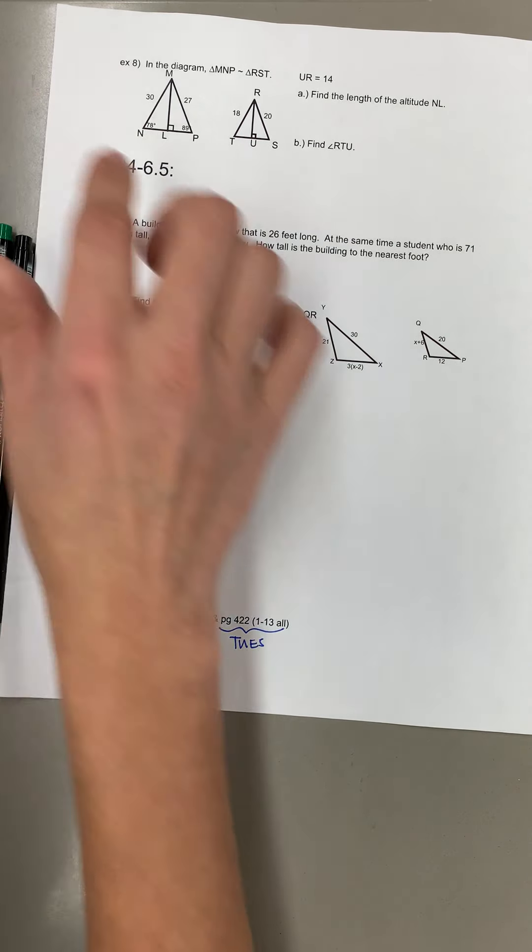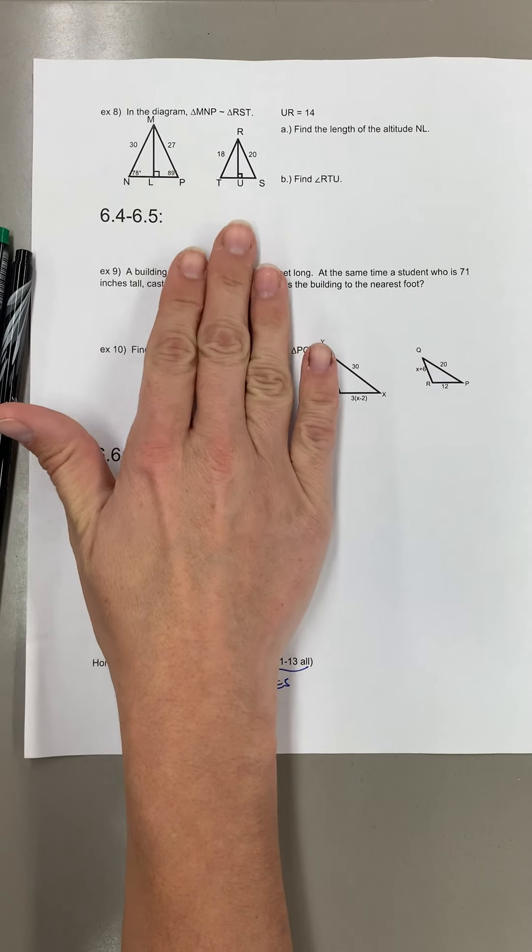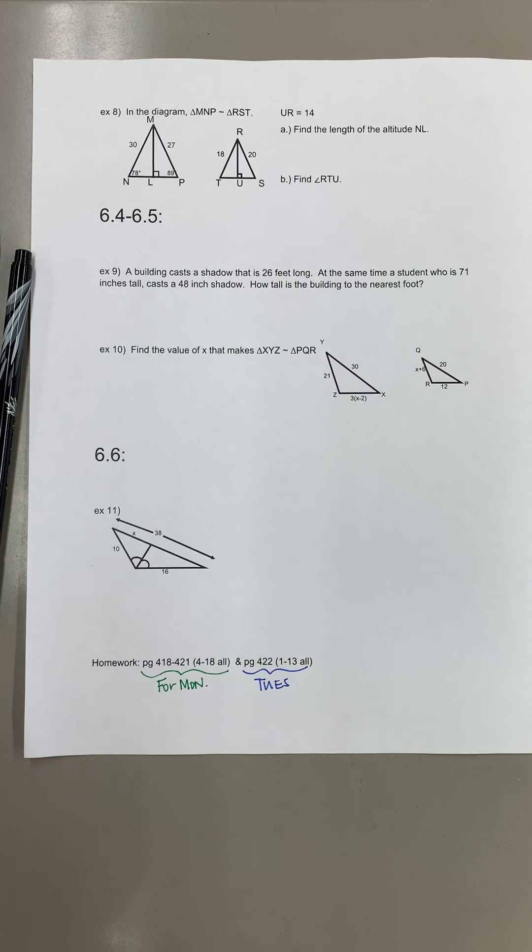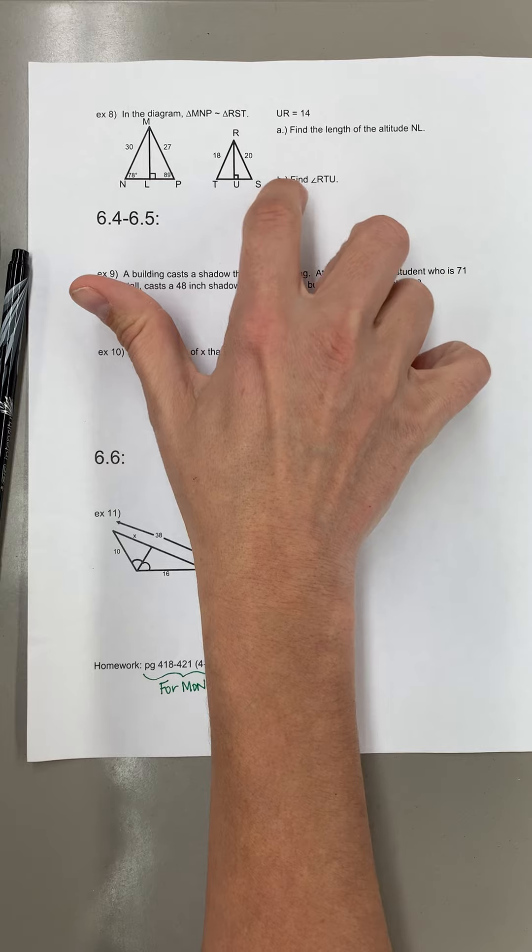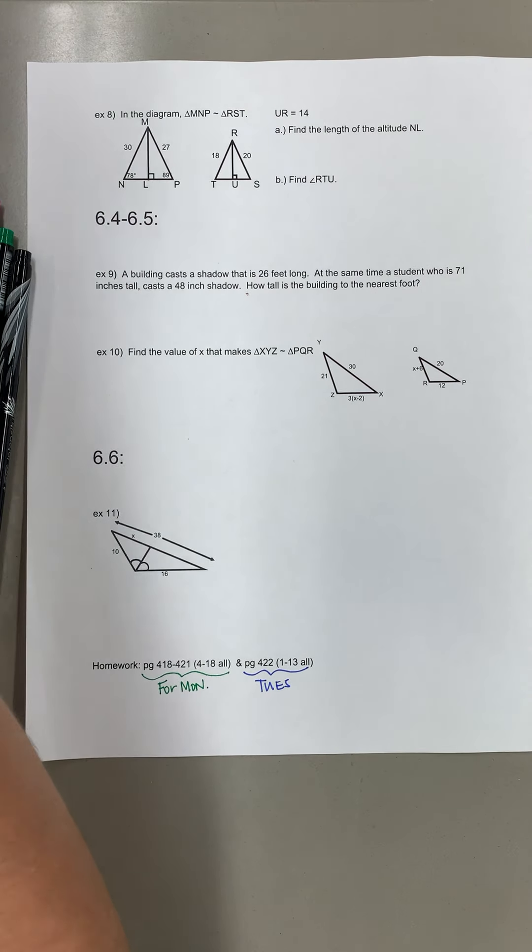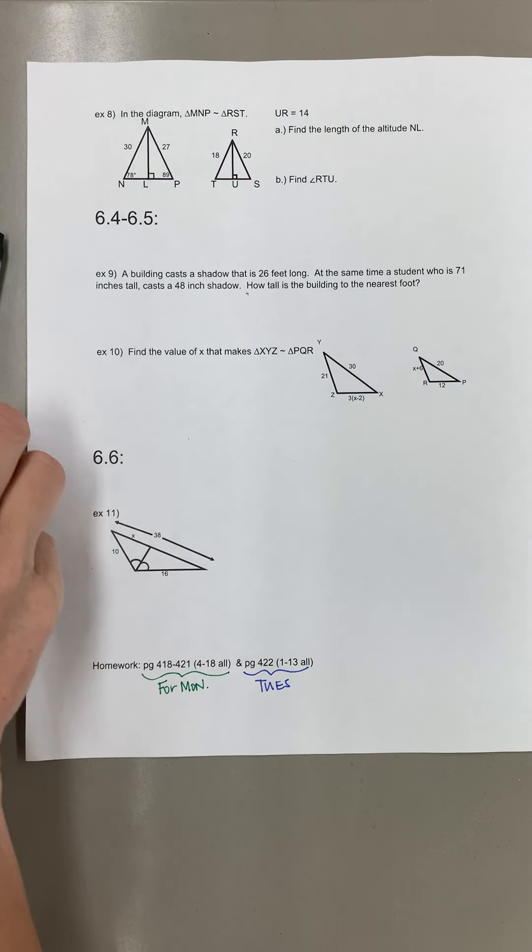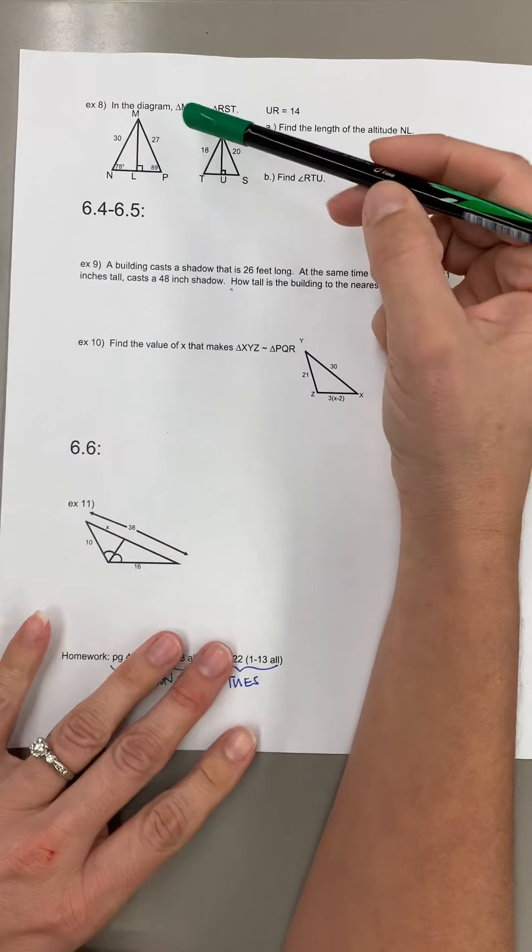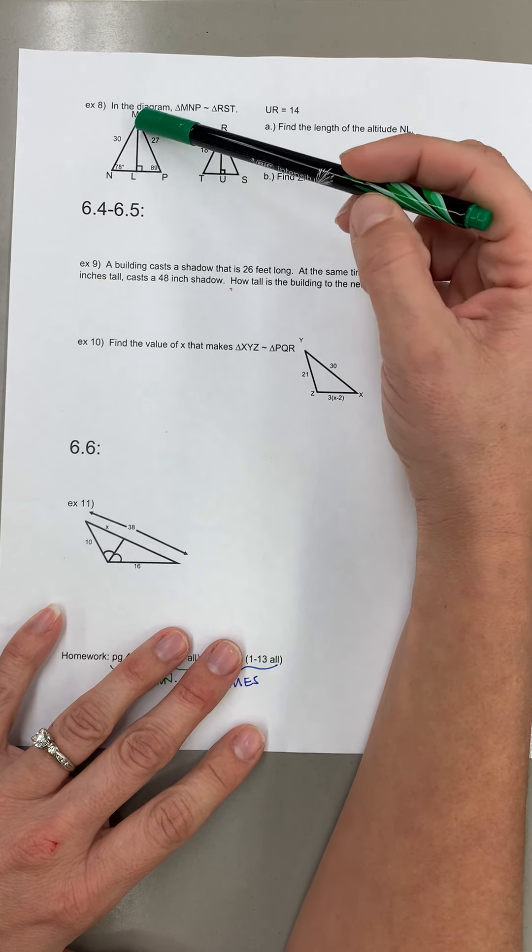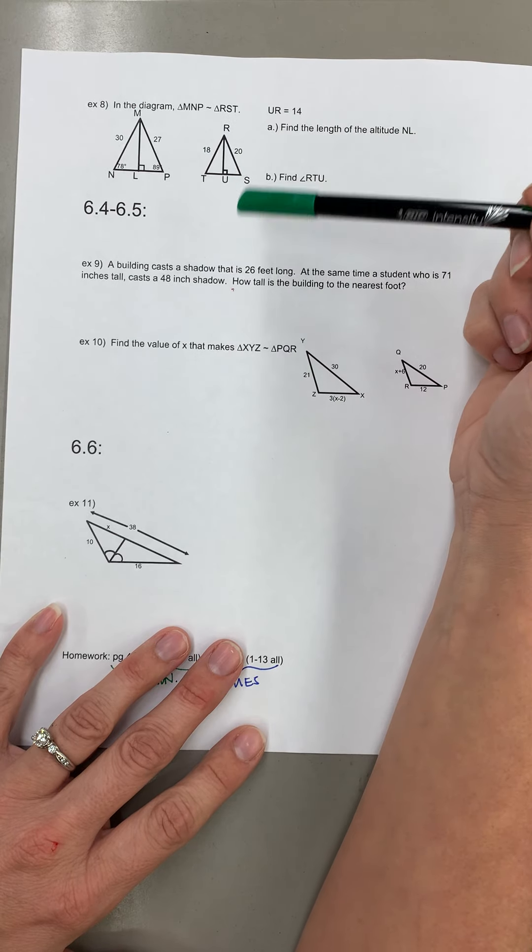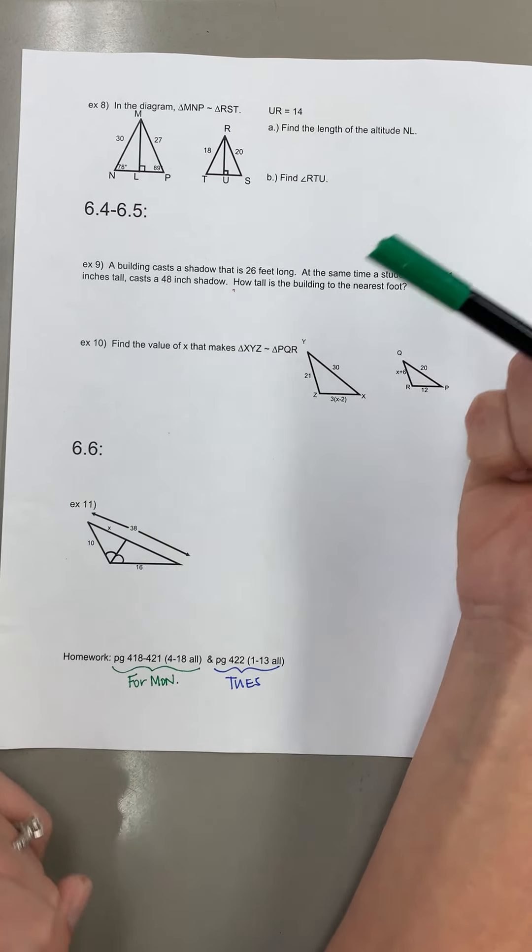So we were still in similar polygons and what this one was telling us is we have similar triangles and they give us some information about the altitude of the triangle. So not only are triangles similar and their parts proportional, but also the altitudes, the medians, kind of those special parts are also proportional.